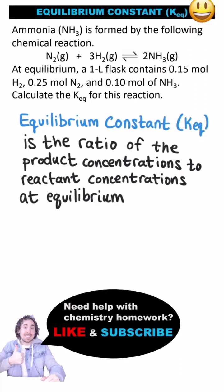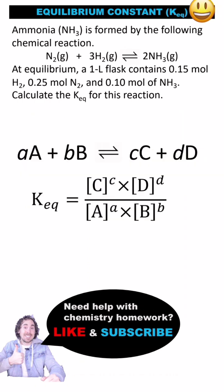The equilibrium constant is the ratio of the product concentrations to the reactant concentrations at equilibrium. A general equation to calculate KEQ looks like this, and it's based on this example of a chemical equation.